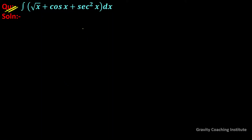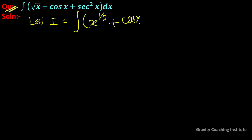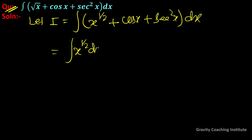The question is to integrate root x plus cos x plus sec square x dx. Let I equal to integration of x to the power 1 upon 2 plus cos x plus sec square x into dx. This equals integration of x to the power 1 upon 2 dx, plus integration of cos x dx, plus integration of sec square x dx.